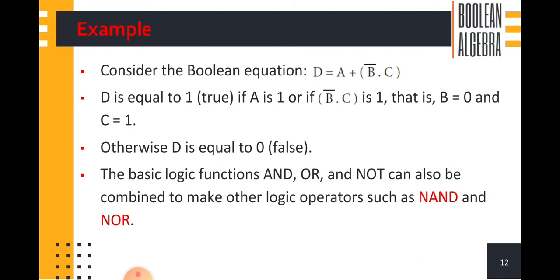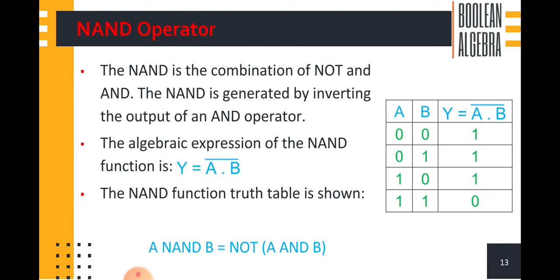The basic logical functions, also known as logic operations. Based on AND, OR, and NOT operators we can also make other logical operators such as NAND and NOR. NAND is the combination of NOT and AND logic operator. The NAND is generated by inverting the output of the AND operator — when you invert the output of AND operator, we get the output of NAND operator.